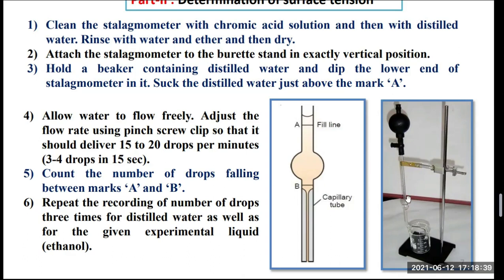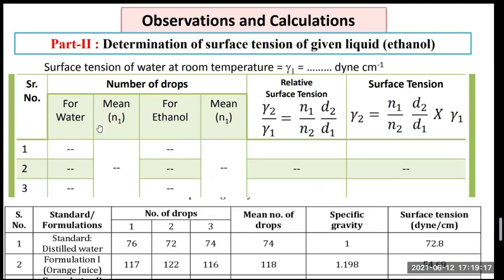There should be marks A and B on the stalagmometer. Hold a beaker containing distilled water, dip the lower end of the stalagmometer, and suck water just above mark A. Allow the water to flow freely. Adjust the flow rate using a pinscrew clip so that it delivers 10 to 20 drops per minute — 10 to 15 drops per minute is better. Count the number of drops falling between marks A and B. Repeat the recording three times for distilled water as well as for the given experimental liquid.